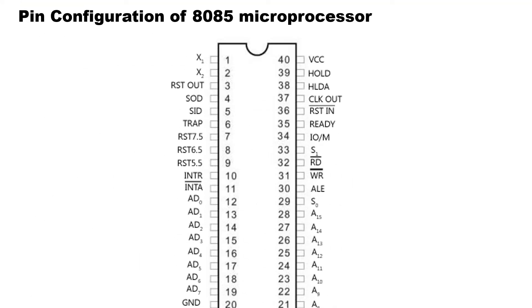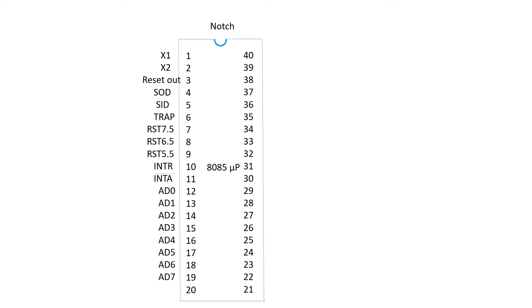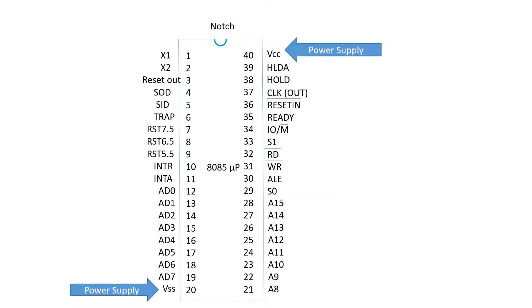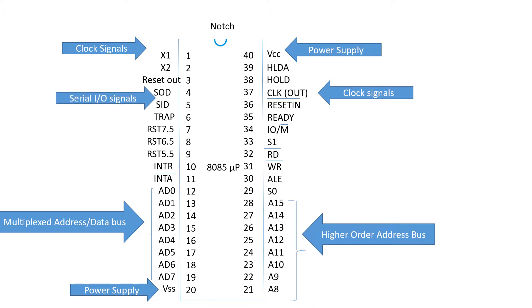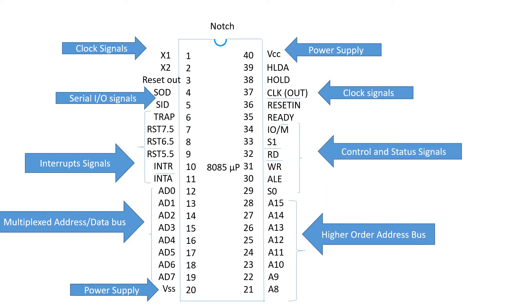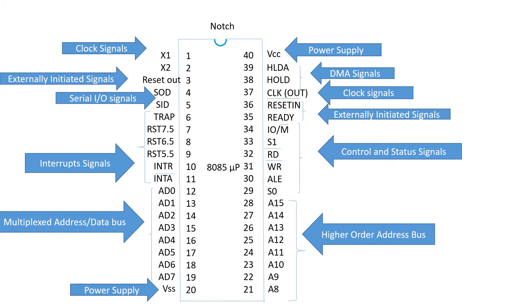This is the pin configuration of the 8085 microprocessor, where almost all things we have already discussed in detail. Starting with the power supply, secondly clock signals, thirdly multiplexed address and data bus, higher order address bus, serial input-output signals, and interrupt signals. Last class we discussed about the control and status signals. Today we are going to discuss about the externally initiated signals and lastly the DMA.